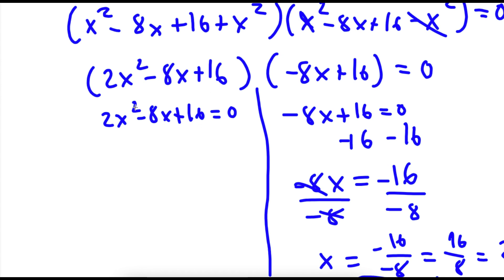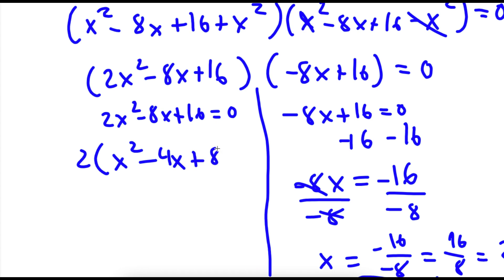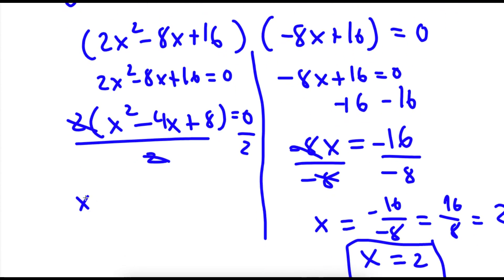For the equation 2x squared minus 8x plus 16 equals 0, I'm going to factor out 2, since the greatest common factor of all terms is 2. So I have 2 times x squared minus 4x plus 8 equals 0. Dividing both sides by 2, I'm left with x squared minus 4x plus 8 is equal to 0.